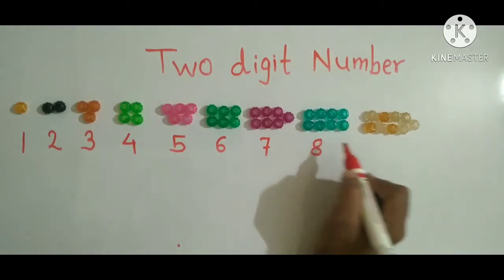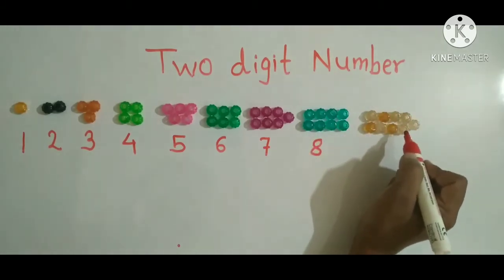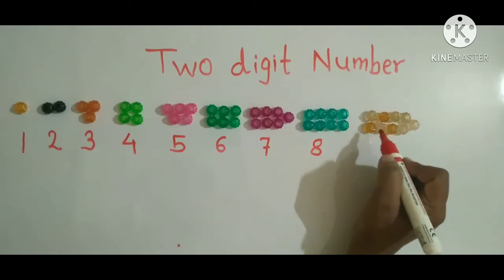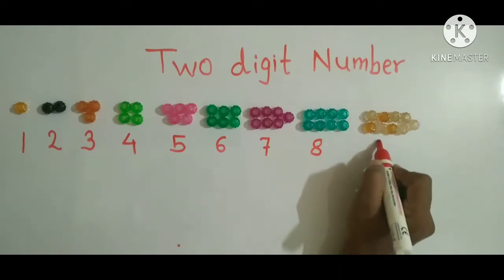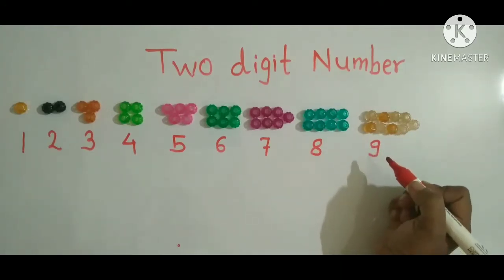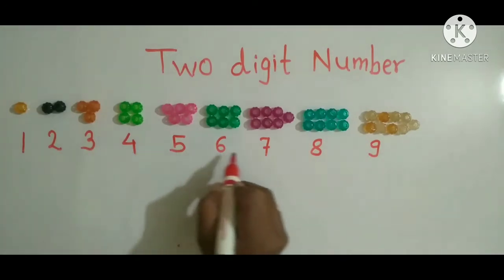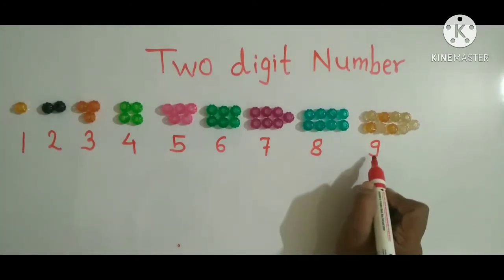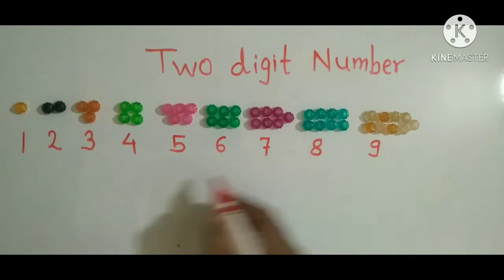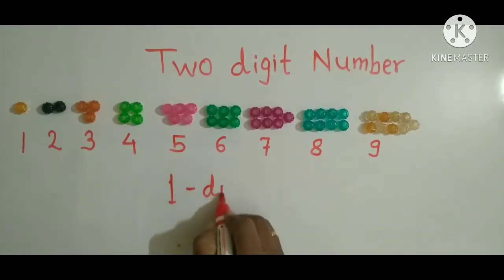Eight beads. One, two, three, four, five, six, seven, eight. And nine beads — one through nine. Already you know that 1 to 9 digits. See here, everywhere there is 1 digit. So these are known as 1-digit numbers.